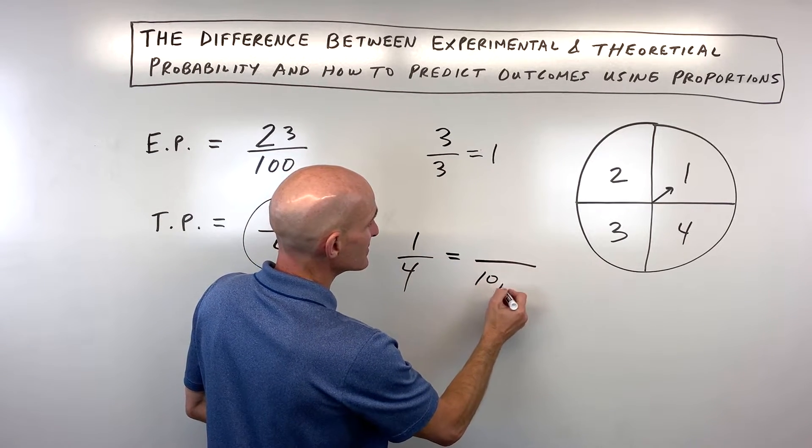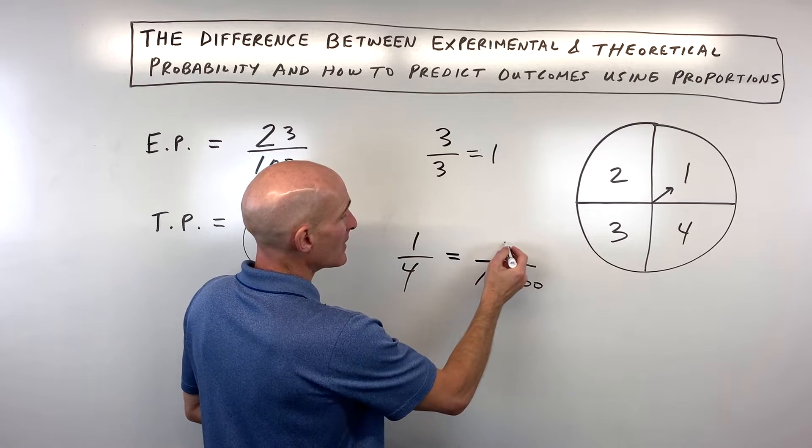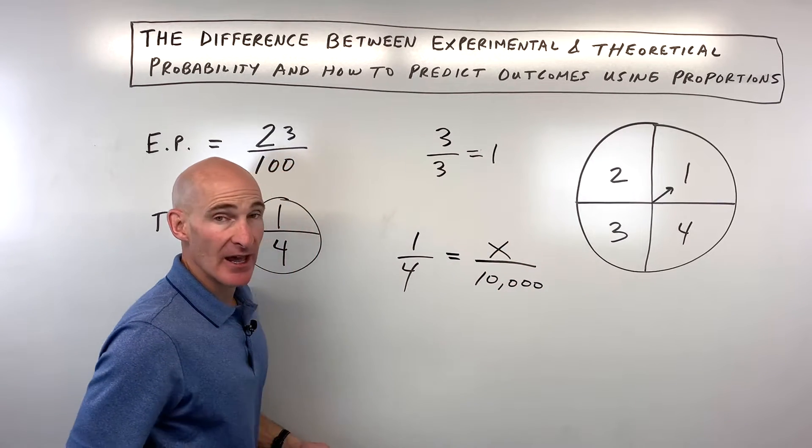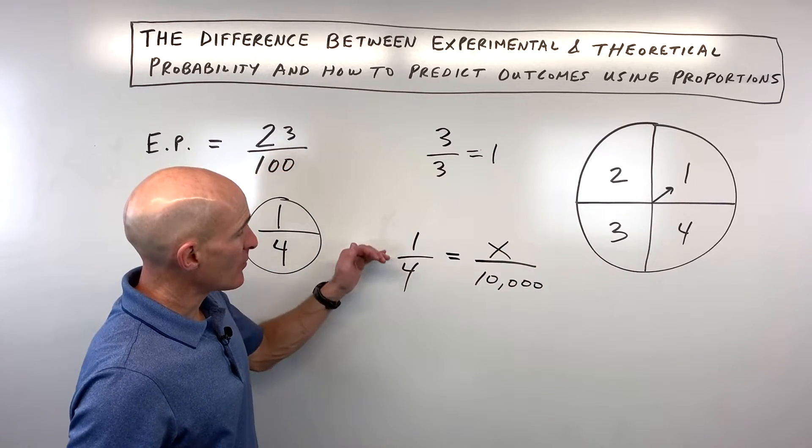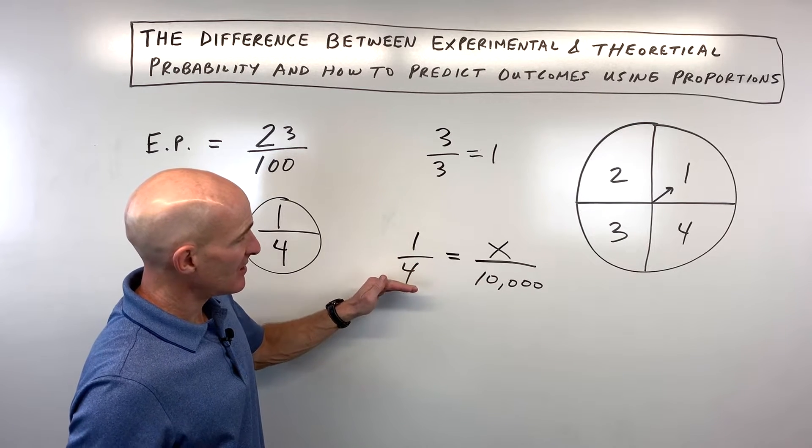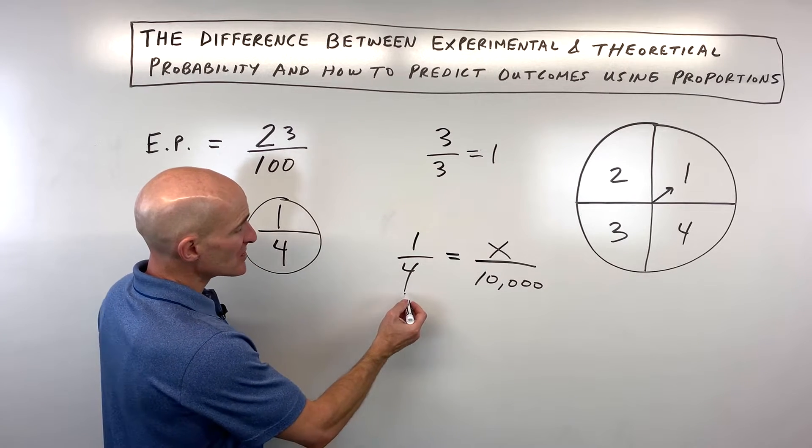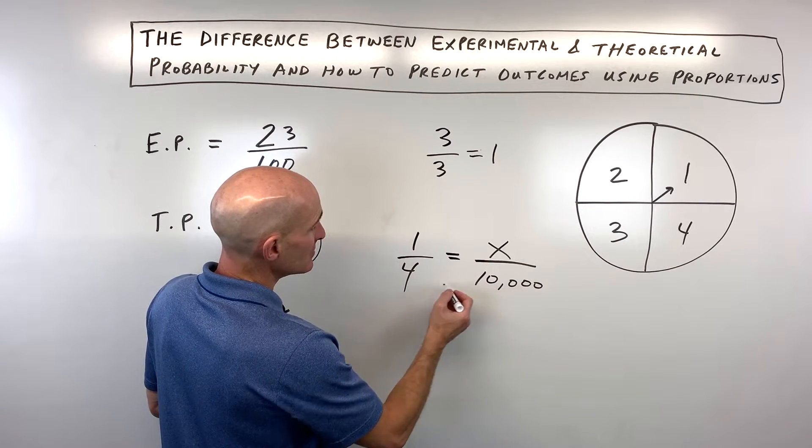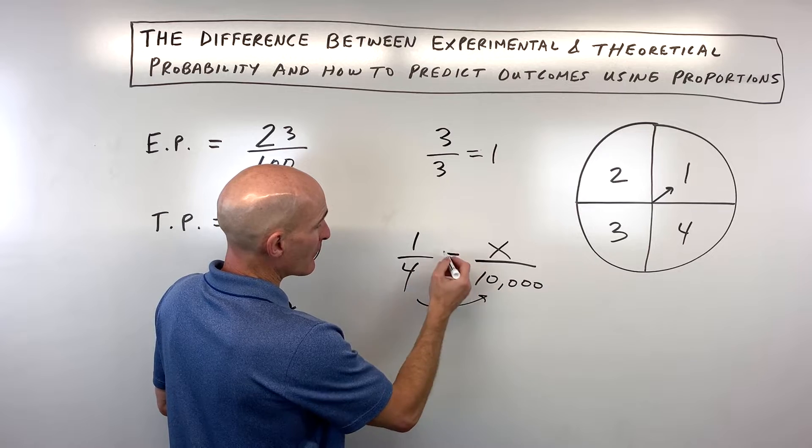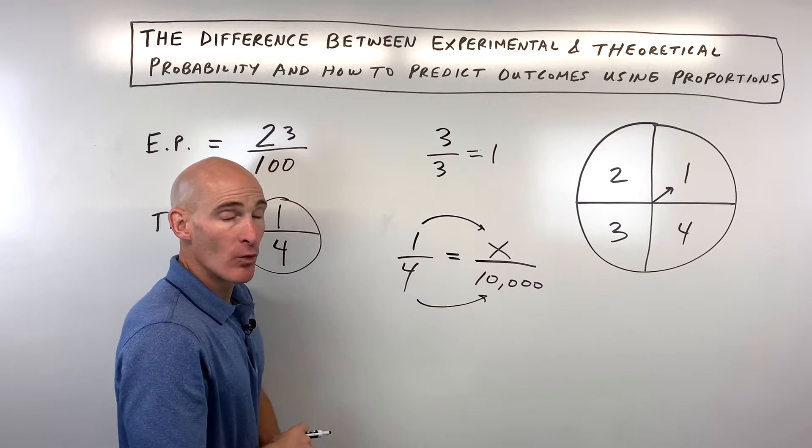So we say, if we were to spin this 10,000 times, how many ones would we expect to get? And so you make a proportion. It's like the successes out of the total equals the successes out of the total. And you can do this a couple different ways. You could say four times what equals 10,000. And whatever you multiply the denominator by, you multiply the numerator by, that's one way to solve proportions.